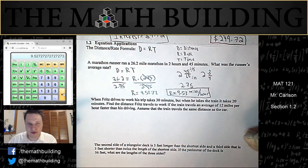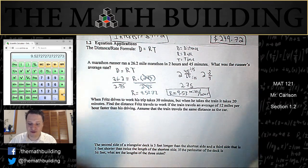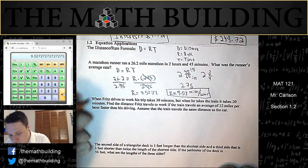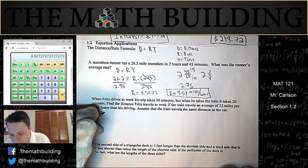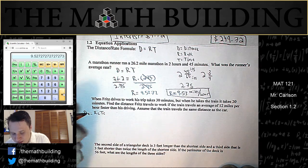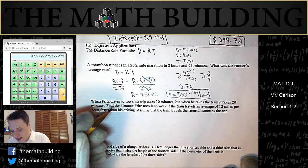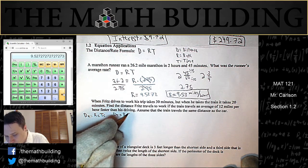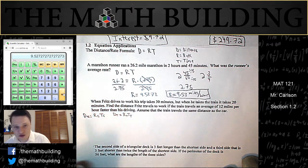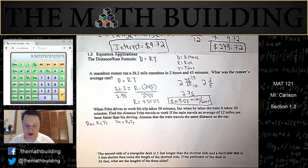The reason this problem is a little more complicated is we actually have two dirt formulas. We have distance equals rate times time of the car, and so that's where I write these little c's to represent car. And we have distance equals rate times time of the train.